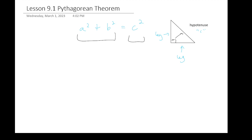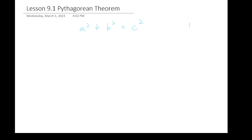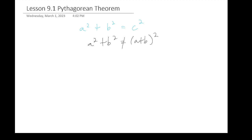One of my big algebraic pet peeves is seeing a squared plus b squared is equal to a plus b squared, which is just nonsense — it's just not the case. Just think about this: three squared plus four squared — it's not three plus four squared. Three plus four is seven. Seven squared is 49. Three squared is nine, four squared is 16. That's not going to be equal to 49 when we take the sum of those two things and square them.